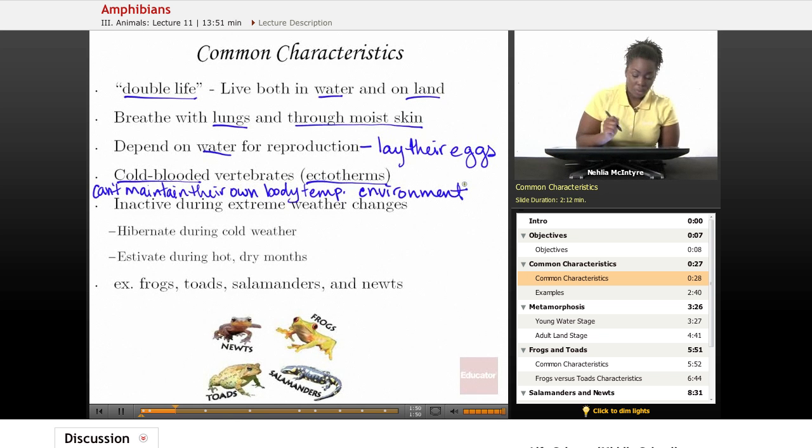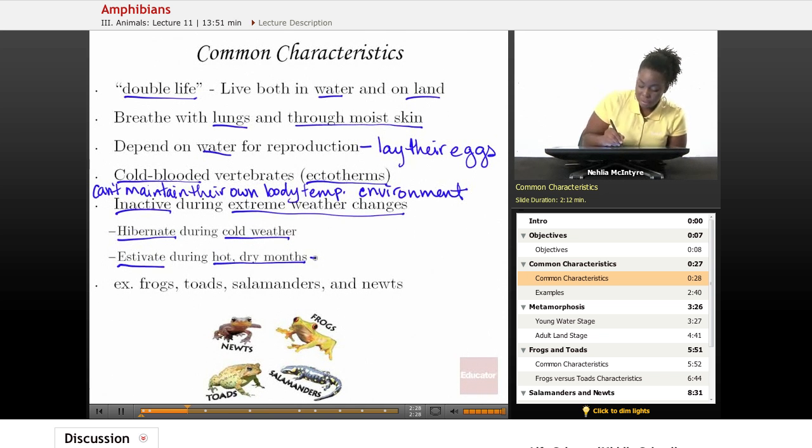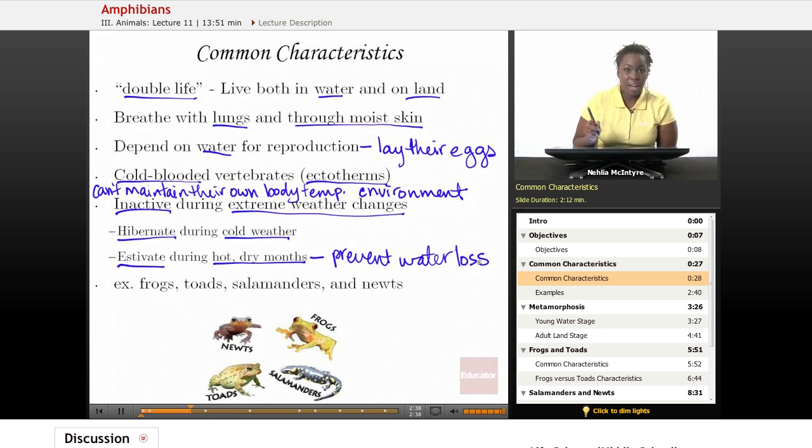They also are very inactive, or they have certain times when they have no activity, and that occurs during extreme weather conditions. For example, amphibians are able to hibernate or go to sleep and not look for food and are very inactive during very cold weather. But at the same time, on the other end of the spectrum, they also are able to estivate, which means they're having a very inactive period during very hot and dry months. And that's to help them survive and prevent water loss so that they don't dehydrate.